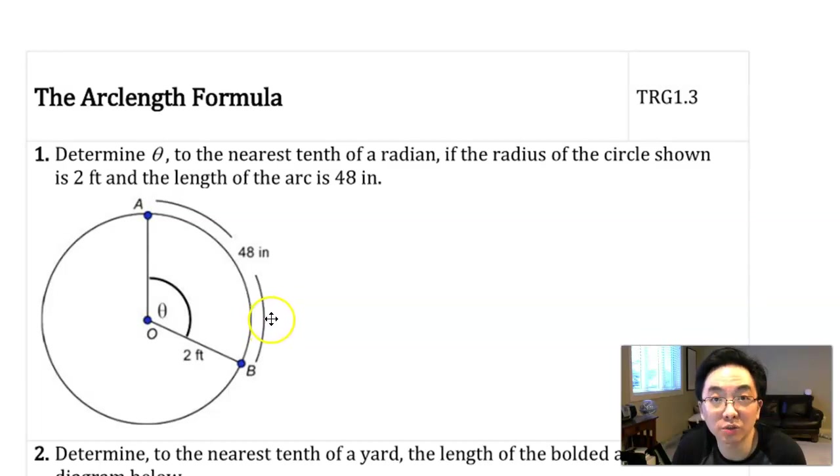In this video, we're going to take a look at three examples of how to use the arc length formula. The arc length formula looks like this: theta equals a over r. Manipulated, you can write it as a equals r theta.